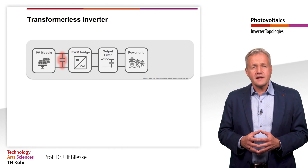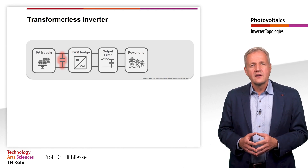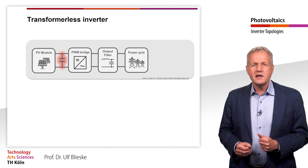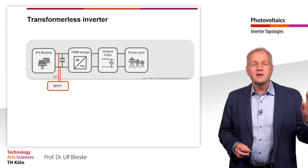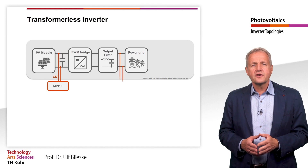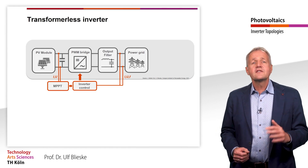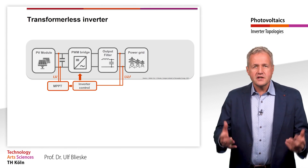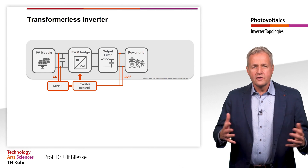Where does MPP tracking take place in this inverter, and how is the PWM bridge controlled? These functions are controlled via two control loops. The MPP of the solar generator is searched for in the first control loop — for this purpose, the current and voltage of the solar generator are measured. The second control circuit ensures that the voltage and frequency of the output signal are synchronous with the mains voltage. For this purpose, grid current, voltage, and frequency are measured on the alternating current side, and the clocking of the PWM bridge is controlled accordingly.